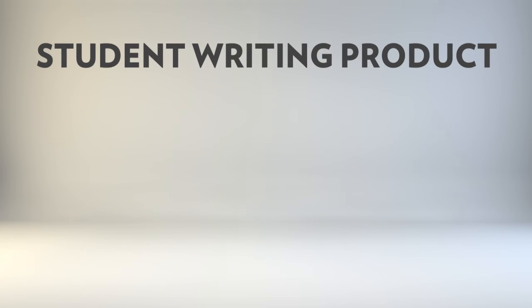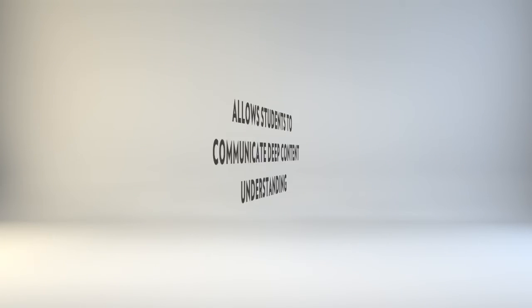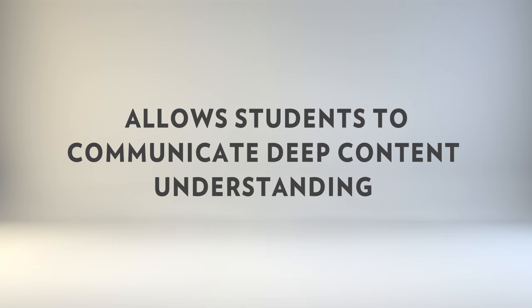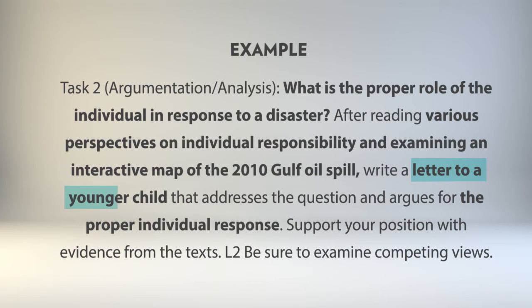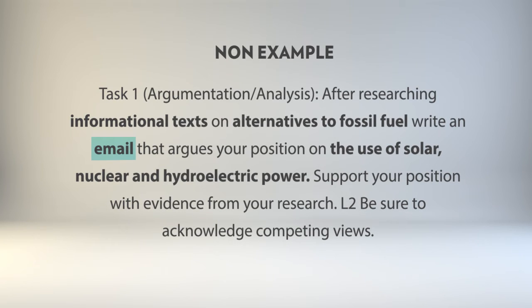Check the student writing product. Is it linked in clear and meaningful ways to the content and type of writing? Is it a multi-paragraph, appropriate composition? Does it provide adequate challenge and allow students to communicate deep content understanding? In this example, a letter is a good fit for the task, and writing for a specified audience may strengthen the tone and language of the writer's argument. On the other hand, an email is not a good fit for either the content or task type. A student will analyze and synthesize multiple sources of information about fossil fuels and alternative energy sources, and an email is brief in nature and would not lend itself to the development of a fully cited argument with counterclaims and examples.